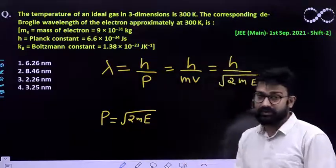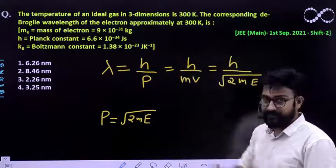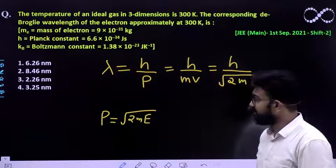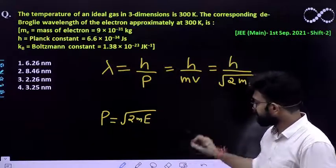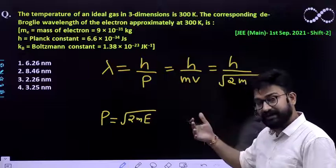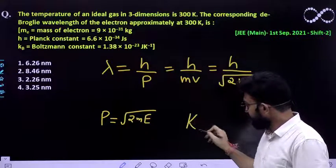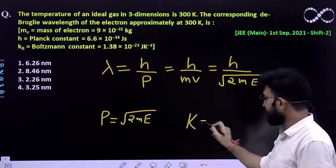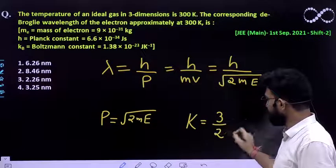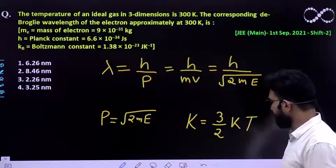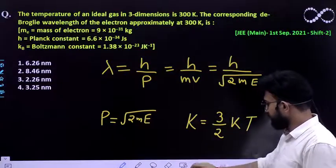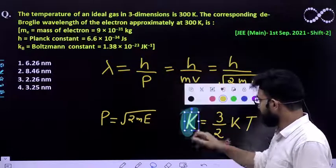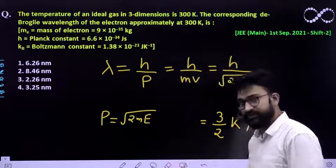Here the particle is electron which is at a temperature of 300 Kelvin. So we already know that kinetic energy per particle, per molecule, is given by expression 3 by 2 KT. So what is K over here? K is nothing but Boltzmann constant where T is the temperature.